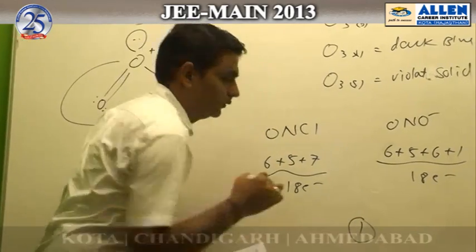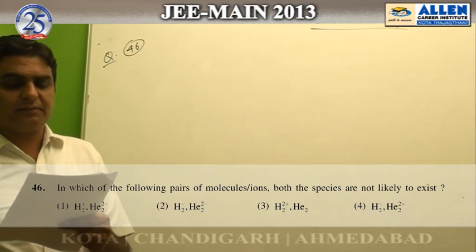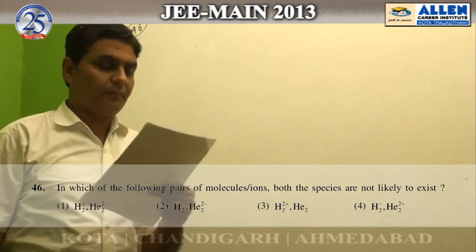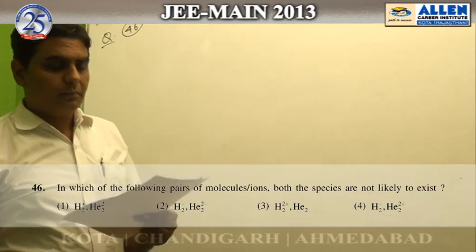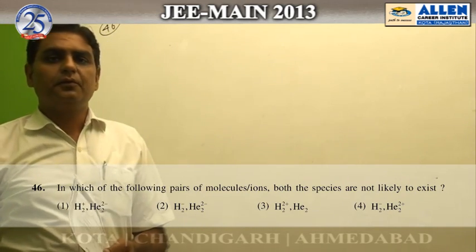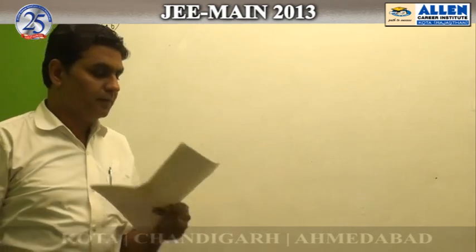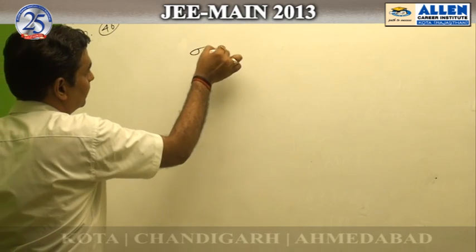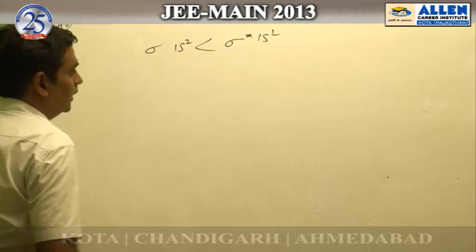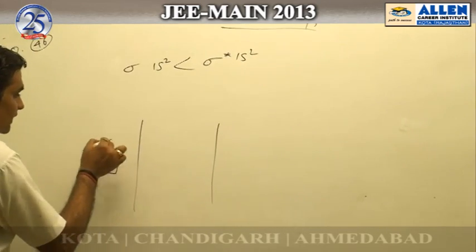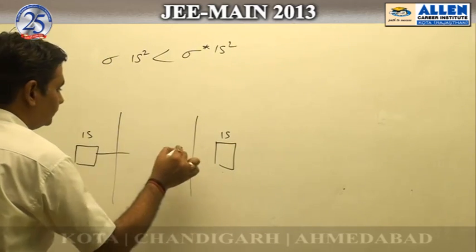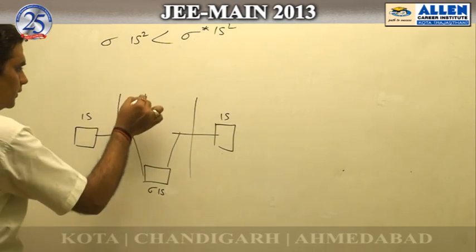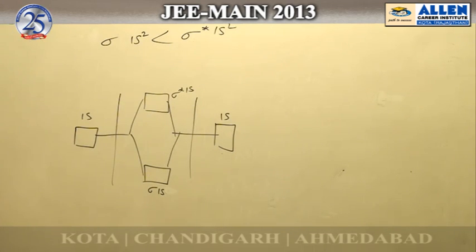Question 46: in which of the following pairs of molecular ions are both species not likely to exist? According to molecular orbital theory, molecular species which have the same number of bonding and anti-bonding electrons do not exist. The energy order for second period elements is: σ1s < σ*1s, as shown in the energy diagram.